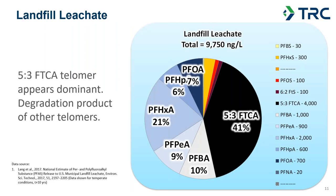This signature is from an article showing 5:3-fluorotelomer carboxylic acid dominant in landfill leachate, attributed to carpeting. It's a very unique signature. However, 5:3-fluorotelomer carboxylic acid may have different sources — other articles say it can be a breakdown of fluorotelomer alcohols, and sources to landfills can be a mixture of different ingredients. I warn people that it can be easy to be misled by the presence of 5:3-fluorotelomer carboxylic acid, but you can see a very different signature here than the AFFF signatures.